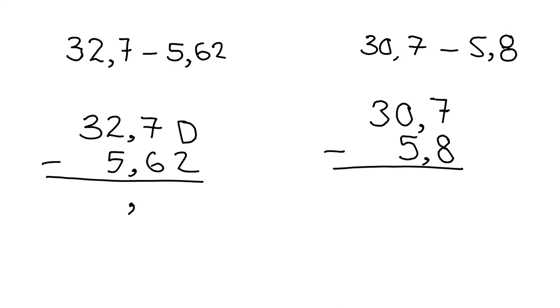Then you say zero minus two. You can't do that, so you have to go over here and take one of those. Bring it over. It becomes 10 minus 2, which gives you 8. Then 6 minus 6 gives you 0.